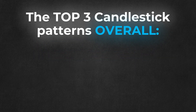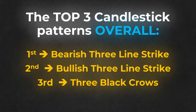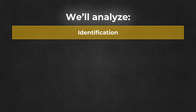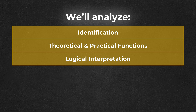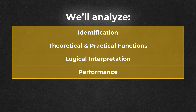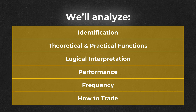According to the research, the top three candlestick patterns in overall terms are the bearish three-lined strike, the bullish three-lined strike, and the three black crows. For each of these three candle patterns, we'll analyze how to identify the pattern, the theoretical and practical functions — meaning whether the pattern is bullish or bearish, and if it is a reversal or a continuation — whether the real market data agrees with the theory, the logical interpretation, the performance, the frequency, and specific tips on how to trade each of these top three patterns respecting basic risk management guidelines for long-term sustainability.